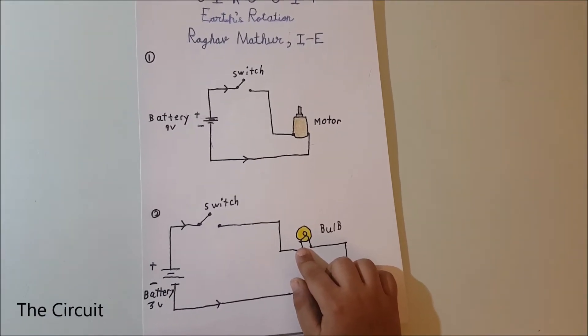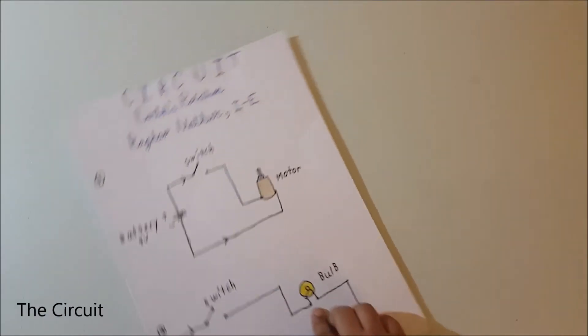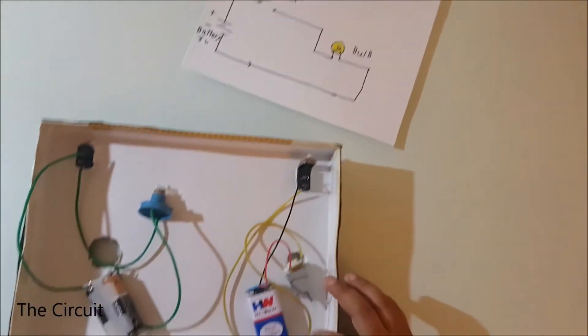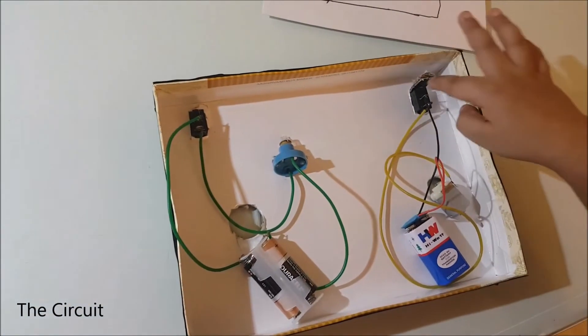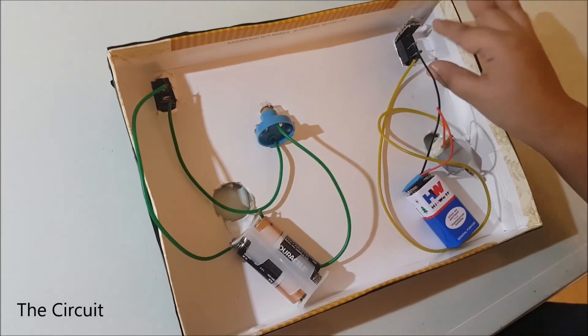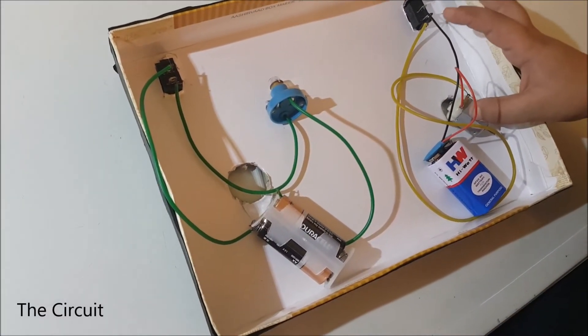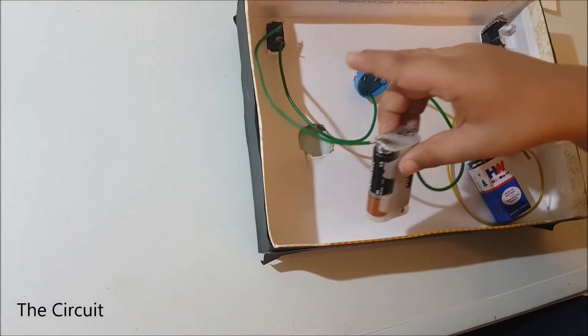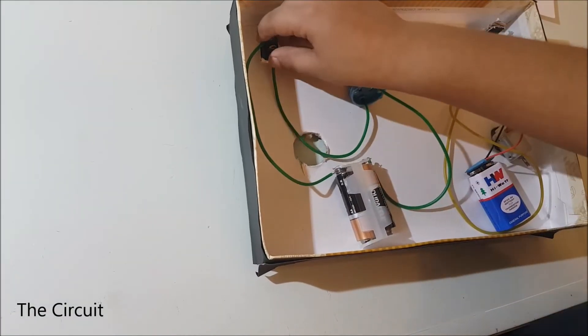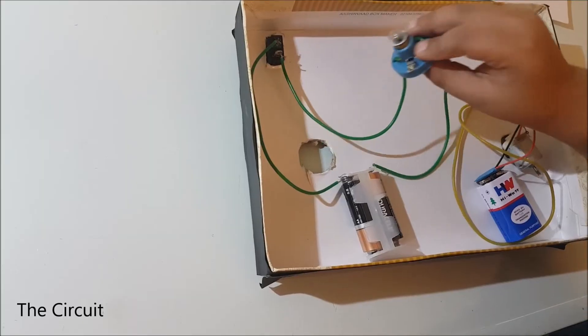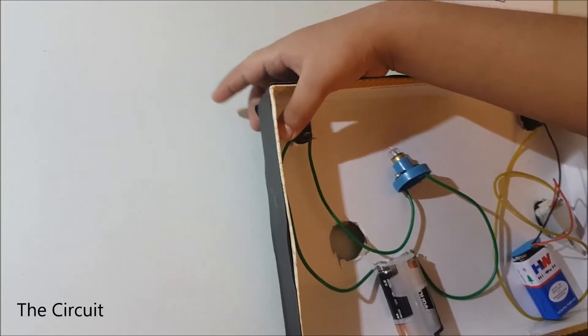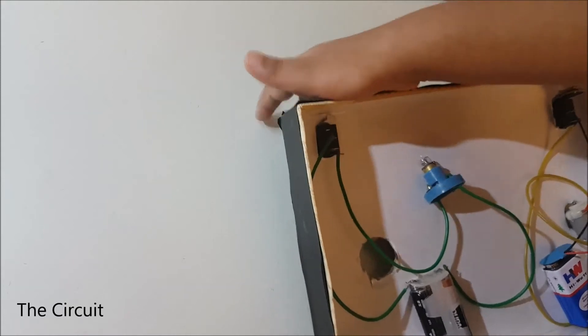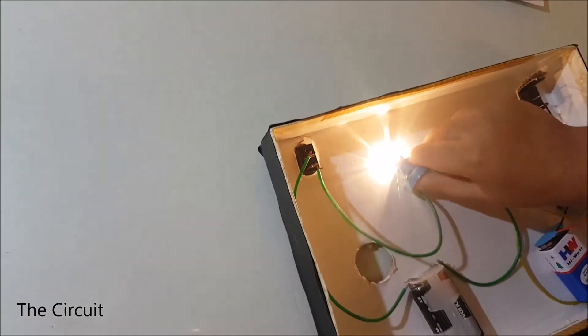Now I will show you the circuit. There is a 9 volt battery attached to the switch and then motor. Similarly, there is a 3 volt battery attached to the switch and then tube bulb. And when you turn it on, the light glows.